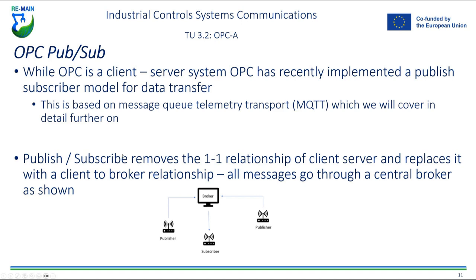Publish-subscribe removes the one-to-one relationship of client-server and replaces it with a client-broker relationship. In this model, all messages go through a central broker. Clients can publish data to the broker and subscribe to data from the broker for any data they're interested in. Multiple clients access one broker — the broker's purpose is to manage data coming from all clients and ensure it is routed correctly to whichever client requires that data.